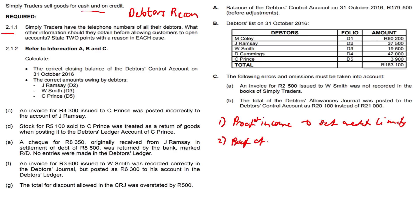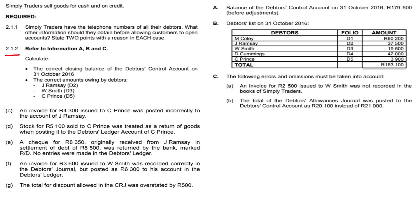Proof of residence — so we can trace debtors that are not adhering to our credit terms and conditions, and maybe to avoid fictitious debtors, so debtors that don't exist. If we haven't vetted their residence, maybe they lied to us about where they stay. Also, things like contact details of friends or family so we can track them, a bank statement, bank balance, or an ID to ensure that their personal details are indeed correct — anything along those lines would score you the marks.